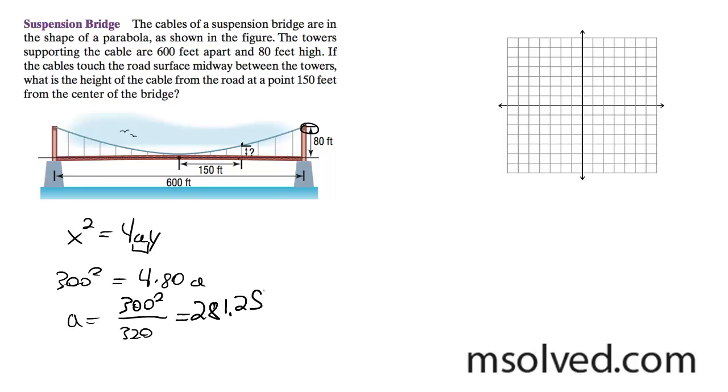Now that we have that, we can rewrite it as x squared at that point. So we get 150 squared is equal to 4 times 281.25. And this will give us y at that exact point, 150 feet out. So 150 squared divided by 4 times 281.25 is going to be equal to 20 feet. Works out really nice, so 20 feet.